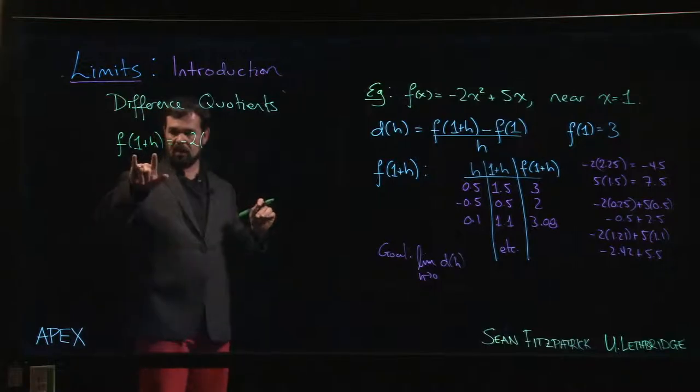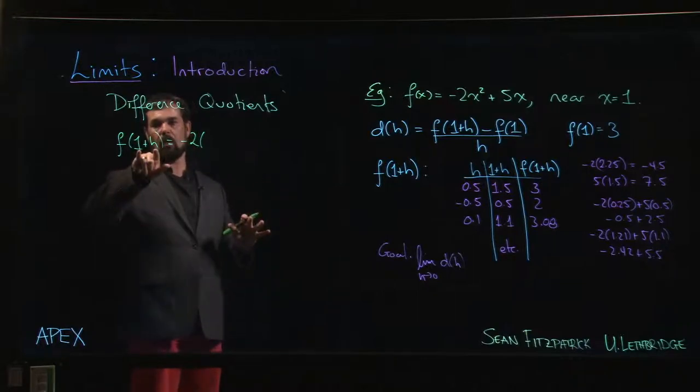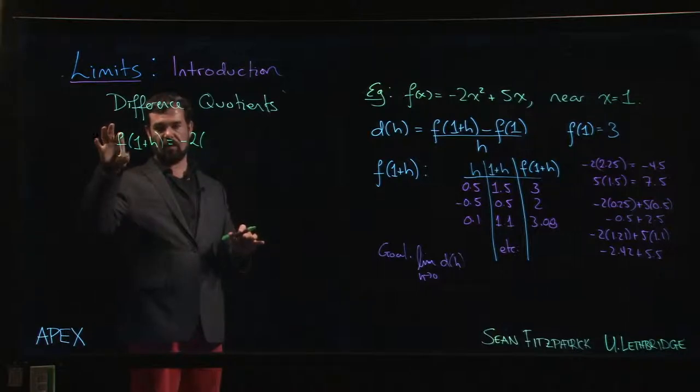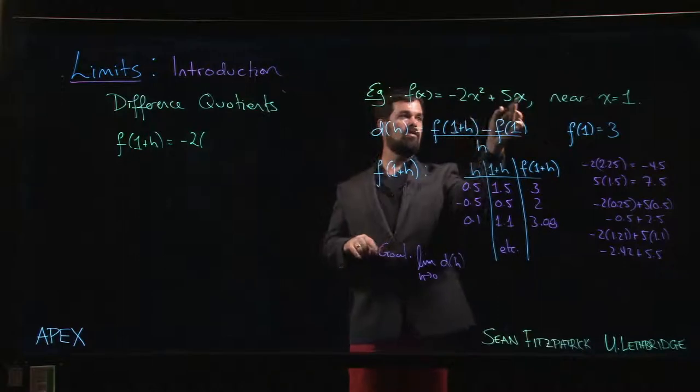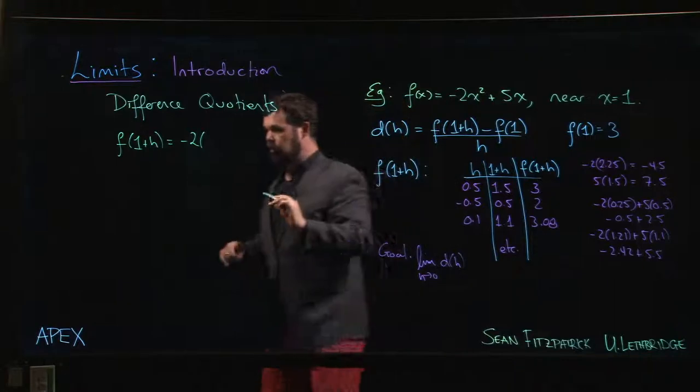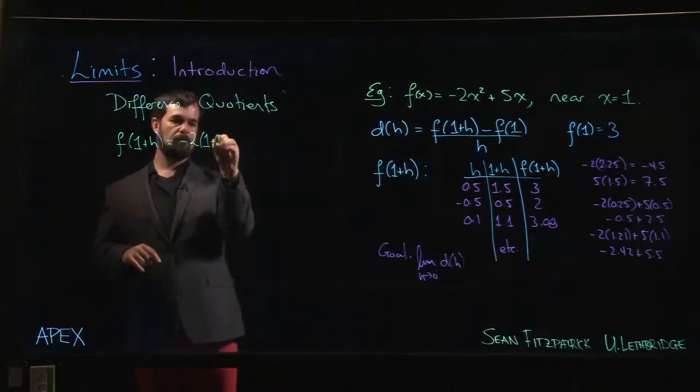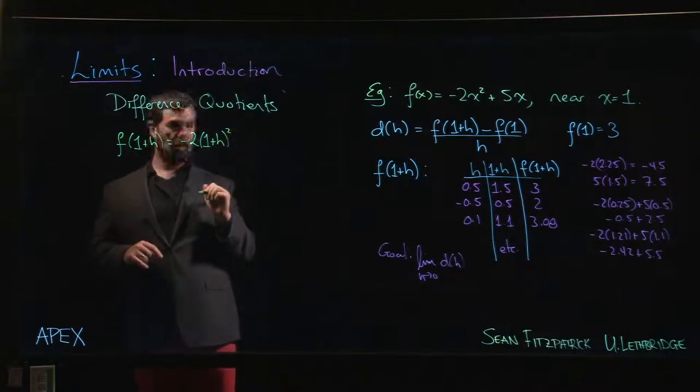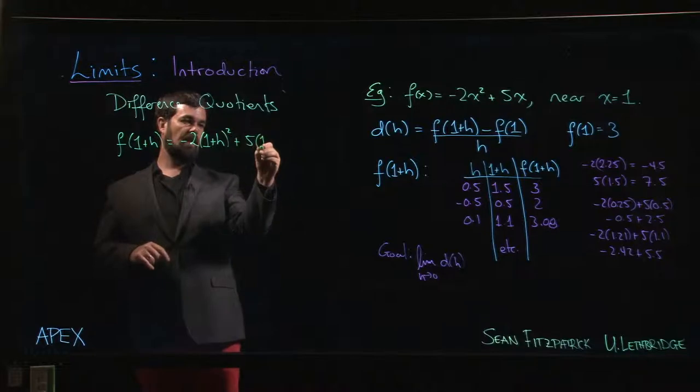Well, f of 1 plus H is minus 2 times - now remember, be very careful. A lot of people struggle in calculus with just basic function notation. That 1 plus H is there as an argument for the function f, so this is instructing you to take each occurrence of x in the original definition of your function and replace it by the input 1 plus H. So that x squared becomes a 1 plus H squared. And then we have 5 times - again, x is replaced by 1 plus H.